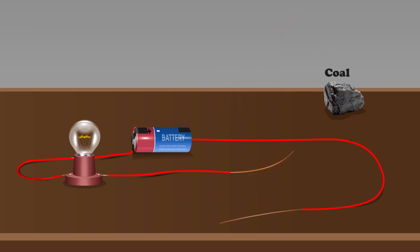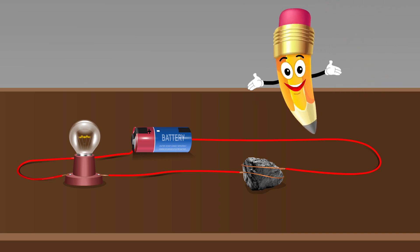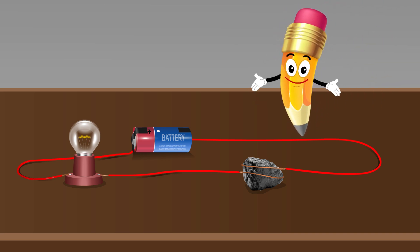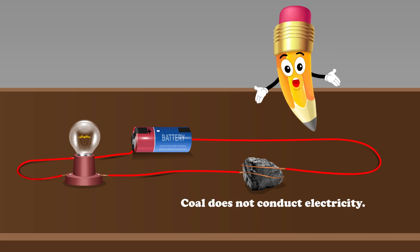Next, we'll test coal, replacing sulphur with coal in our circuit. And again, the bulb does not glow. This indicates that coal is also a poor conductor.